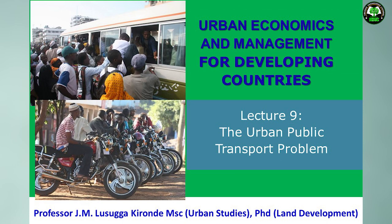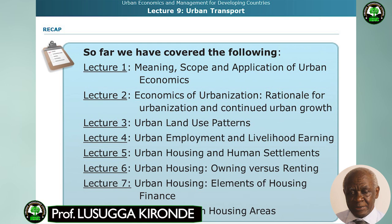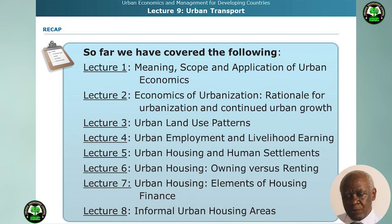We have covered a number of areas so far. In lecture 1, we covered the meaning, scope and application of urban economics. In lecture 2, we looked at the economics of urbanization, including the rationale for urbanization and continued urban growth. In lecture 3, we looked at urban land use patterns. In lecture 4, urban employment and livelihood earning activities. In lecture 5, urban housing and human settlements development. In lecture 6, we compared owning to renting. In lecture 7, we looked at elements of housing finance. And in lecture 8, we looked at informal urban housing areas.